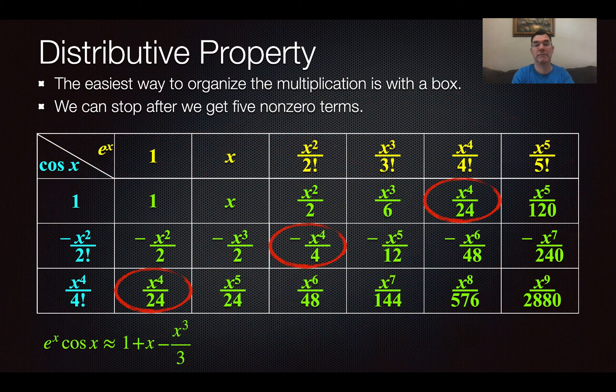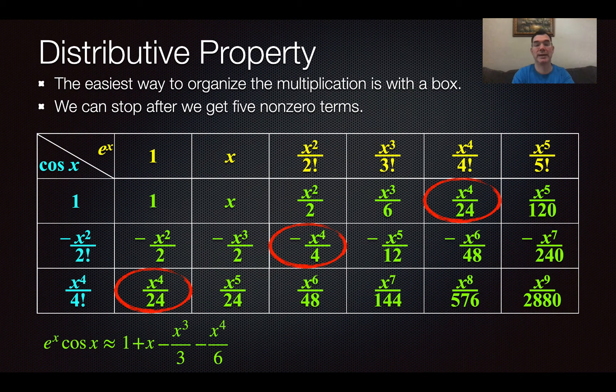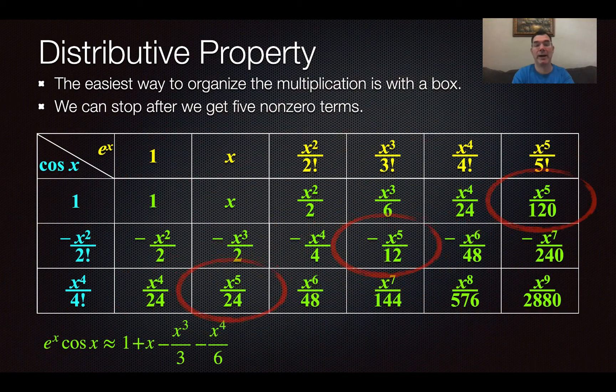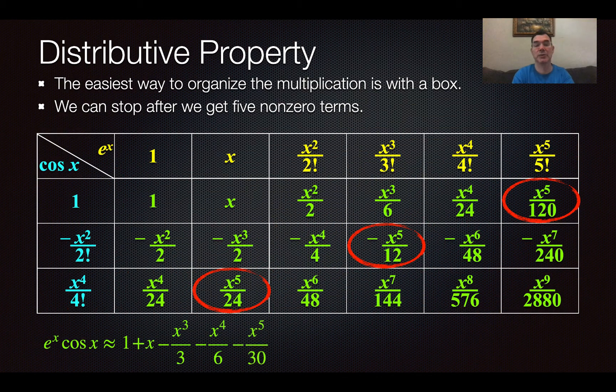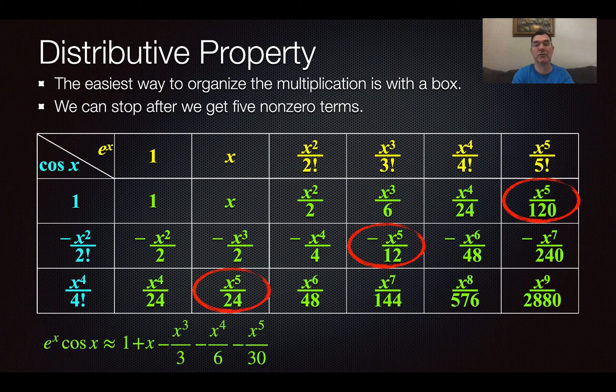So I look for x to the fourths. I've got three of those, and those add up to negative x to the fourth over 6. And now I have my x to the fifths. Those add up to negative x to the fifth over 30.